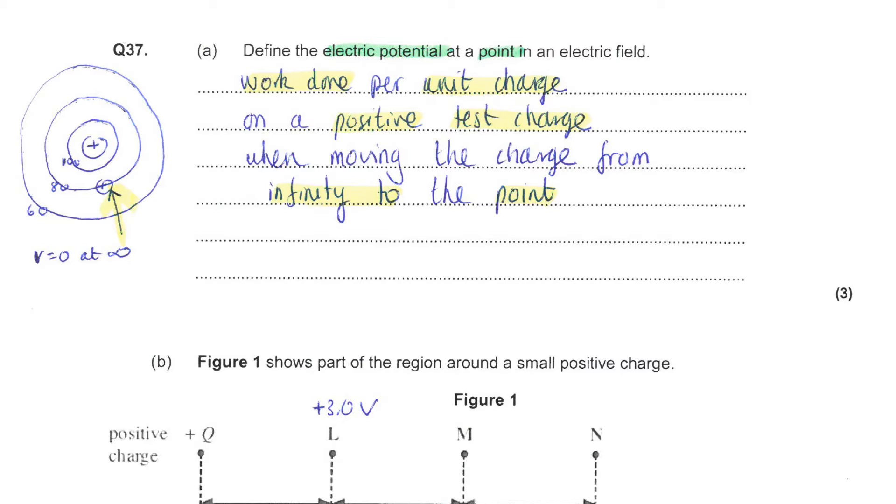If instead of a positive charge, you were considering a central negative charge, then the values for potential would be negative. But you would still be considering the motion of a positive test charge. So imagine moving a positive test charge towards a negative central charge and you'd have an attractive force. So it would make sense that that is negative work.